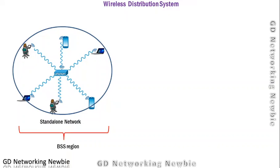For example, we have this basic wireless LAN which we discussed in a previous video. This is a wireless LAN where we have the access point and different nodes known as stations. They are in association, meaning the client has sent a request and the access point has accepted it. They are exchanging information but are bound to that access point. Such a network we call a standalone network, and they have a specific region to communicate because the access point's antenna has a limited range.